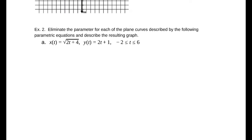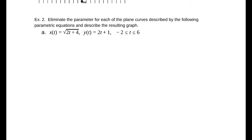Example 2, eliminate the parameter for each of the plane curves described by the following parametric equations and then describe the resulting graph. So what we're going to do is actually create a function of y in terms of x. How we're going to do that is we're going to solve for t in one of these equations. I'm going to solve for t from x squared equals 2t plus 4. Subtracting 4, x squared minus 4 equals 2t, which then gives me t equals x squared minus 4 over 2.